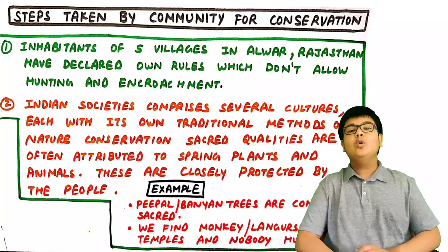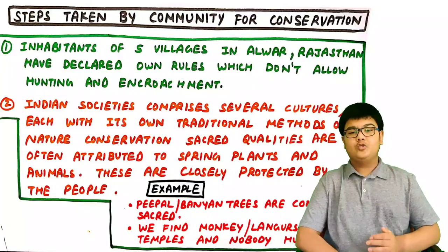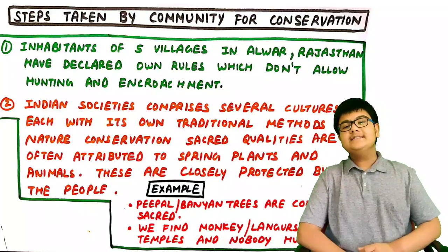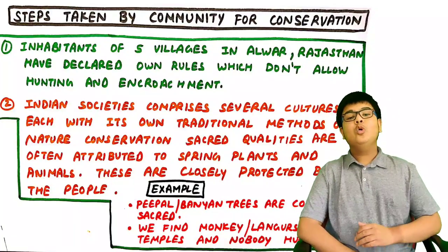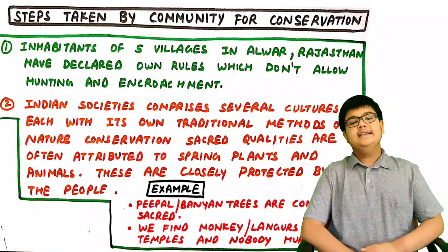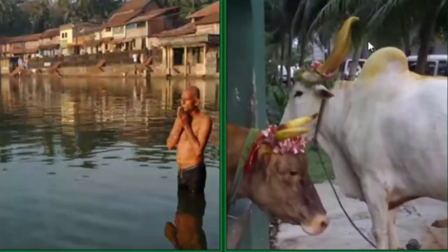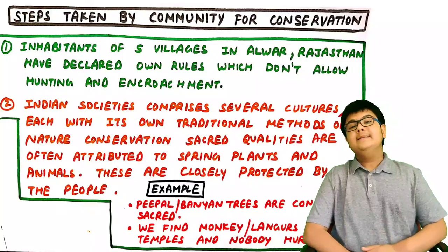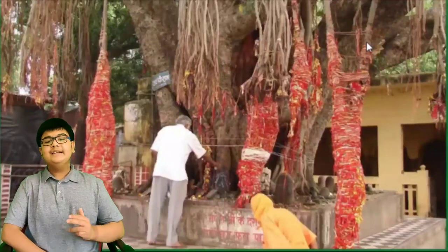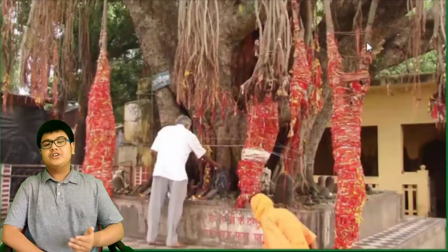First, inhabitants of five villages in Alwar district of Rajasthan have declared their own rules which do not allow hunting and encroachment in the forests. Second, Indian societies comprise several cultures, each with its own traditional methods of nature conservation. Sacred qualities are often attributed to springs, plants, animals etc., and these are closely protected by the people. For example, in temples, banyan trees are considered sacred and people worship them.